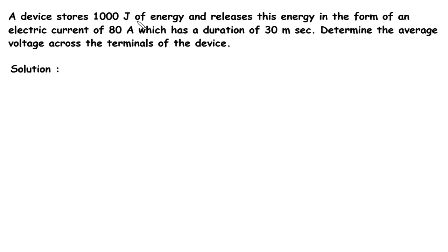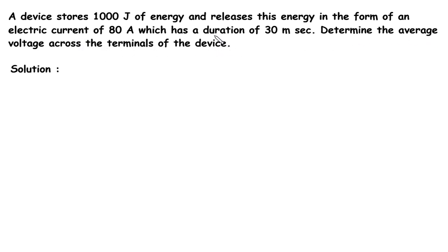A device stores 1000 joules of energy and releases this energy in the form of an electric current of 80 ampere which has a duration of 30 ms. Determine the average voltage across the terminals of the device.